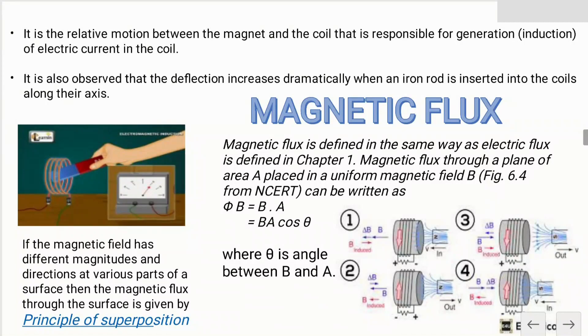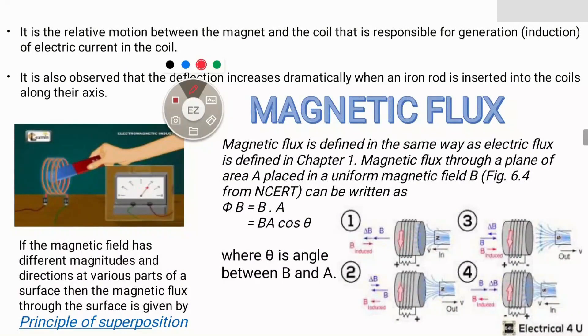Similar to electric flux E·A, magnetic flux is B·A, where B is the strength of the magnetic field and A is the area perpendicular to the magnetic field. The formula is Φ_B = B·A = BA cos θ, where θ is the angle between B and A.